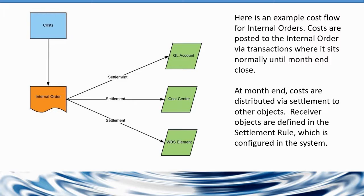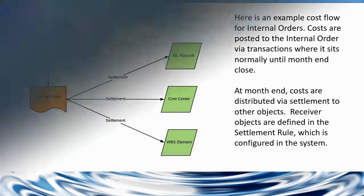And those receiver type objects that you see in green are defined in the settlement rule, which is a configuration area that needs to be completed. And we will talk about that later in the presentation in terms of how you set up that settlement rule, how you set up what's called a settlement profile, and how that is assigned to your internal order type.